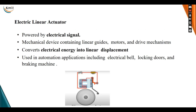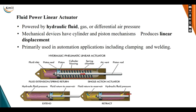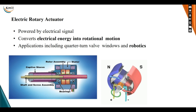The next type is electric linear actuators, powered by electrical signals. These are mechanical devices containing linear guides, motors, and driver mechanics that convert electrical energy into linear displacements. Applications of electric linear actuators include electric bells, locking doors, and braking machines. Fluid power linear actuators are powered by hydraulic fluid, gas, or differential air pressure; mechanical devices with cylinders and piston mechanisms produce linear displacement. Primary applications include clamping and welding.